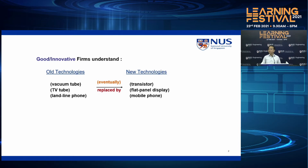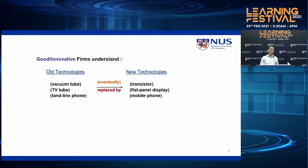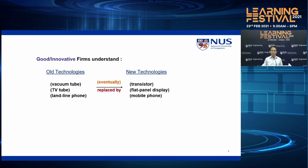Good innovative firms understand the principles of innovation. You always need to apply new technologies to replace old ones. So when the transistor was first invented, the vacuum tube manufacturers saw the threat and thought that they should master the new technology. They invested a lot into R&D to see how transistors could change their products. And as we know today, the transistor has brought in the IT world. The modern world cannot live without transistor-related innovation.